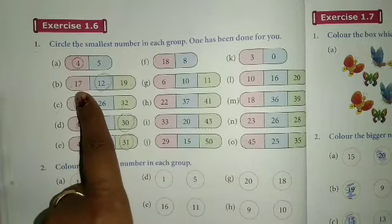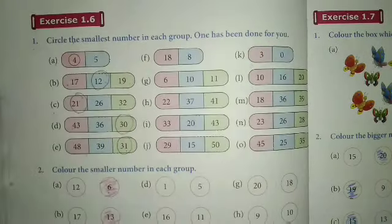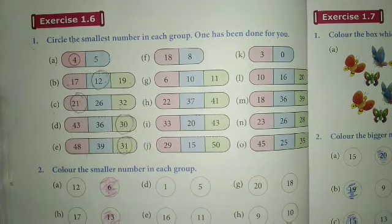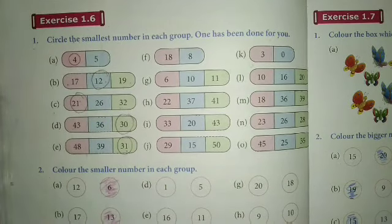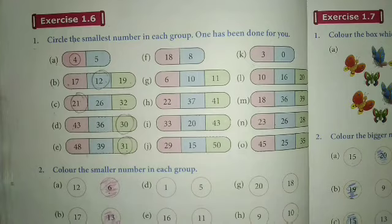Next है 17, 12, 19. अब 17, 12 और 19 में से smallest number कौन सा है? 12. तो इसलिए 12 के उपर हमने circle किया.